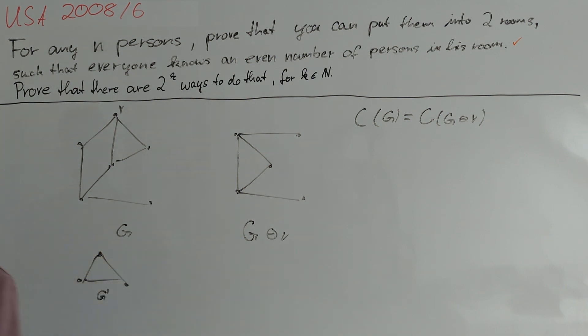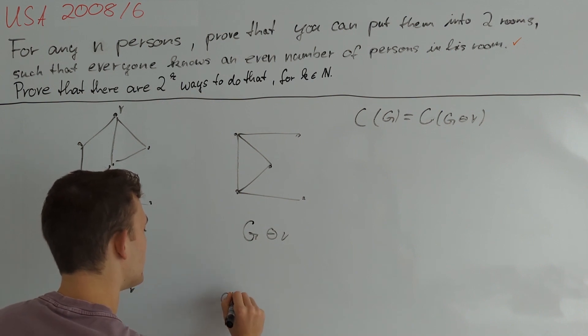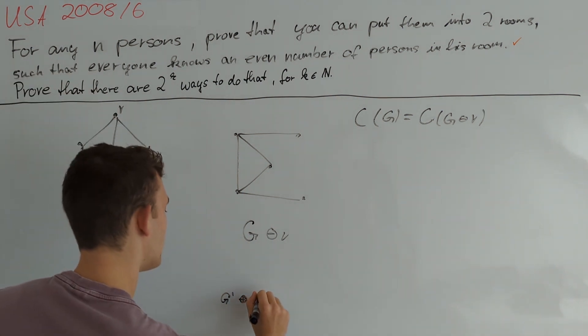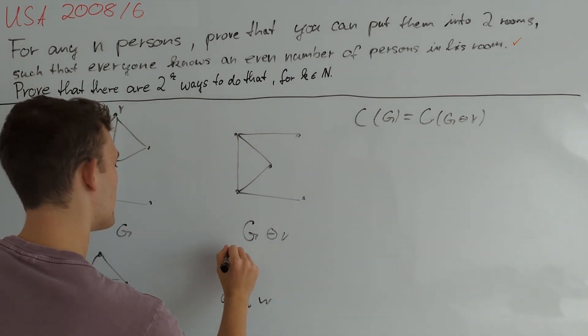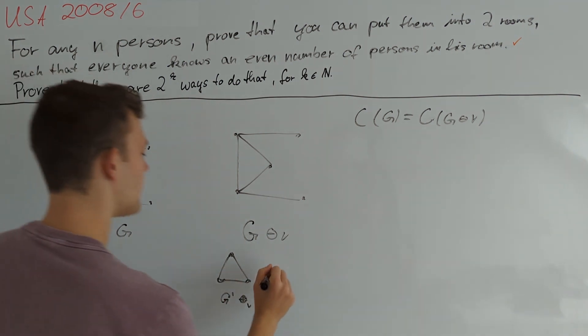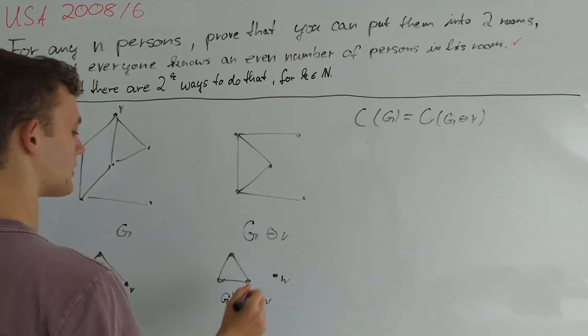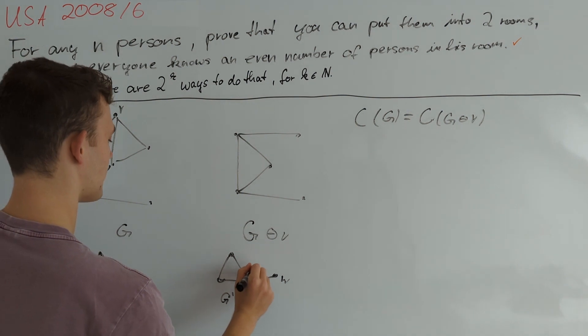So if we consider any graph G prime then we can just take a look at any vertex V of it again and define a new graph G prime O plus subscript V W where we copy our original graph and then add a new vertex W and only connect it to the vertex V.